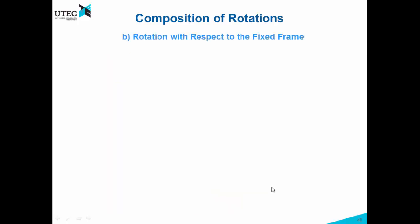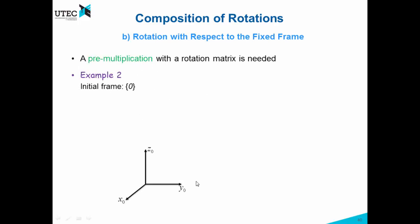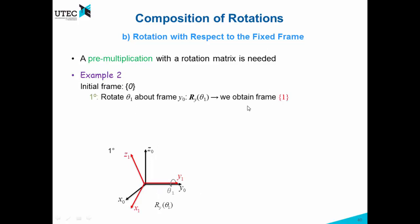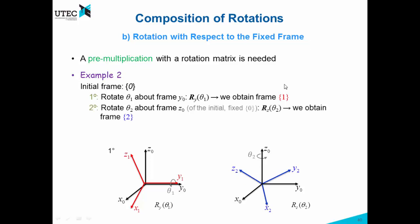If we want to rotate with respect to the fixed frame, we have to pre-multiply. We start again with frame x0, z0, y0, and rotate by angle θ1 about the y axis to get frame 1, which is the red one. But then we rotate again by an angle θ2 about z — and this time this z is the z of the initial or fixed frame. By doing that we get the blue frame. We are rotating θ2 about z with respect to the fixed or initial frame.